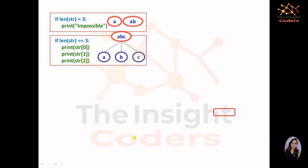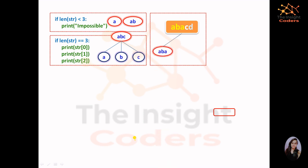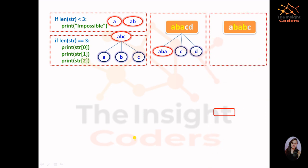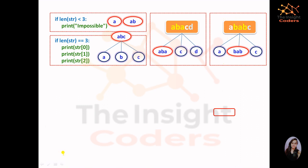In the else part — when neither previous condition applies — consider the test case 'abacd'. Here 'aba' is a palindrome, 'c' is the second, and 'd' is the third. For 'ababc', 'b', 'a', 'b' should be the palindrome with 'c' and 'a' as the others. Why not take 'aba' first? Because you should always take the smaller first substring when such a choice exists, giving more characters to the other parts.